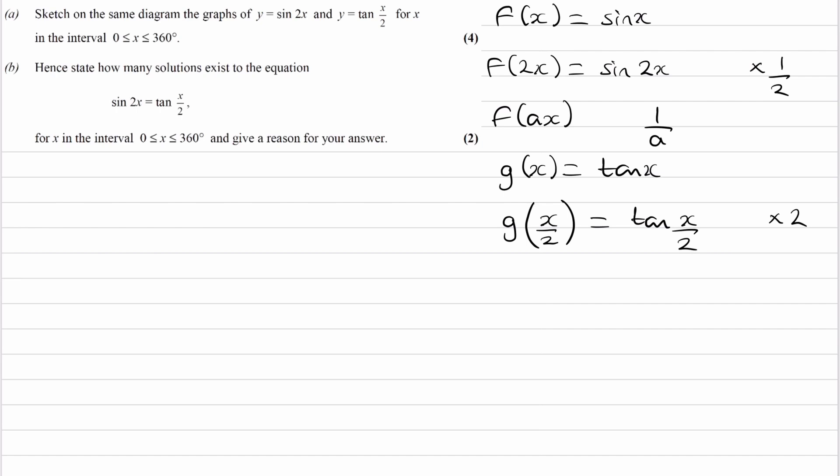Okay, so let's sketch this on our graph. So here we have an xy-axis from 0 to 360. So let's start with sin 2x. So normally a sine graph looks like this. It repeats every 360 degrees. But we're multiplying all of the x coordinates by a half. We're stretching it by a scale factor of a half parallel to the x-axis.